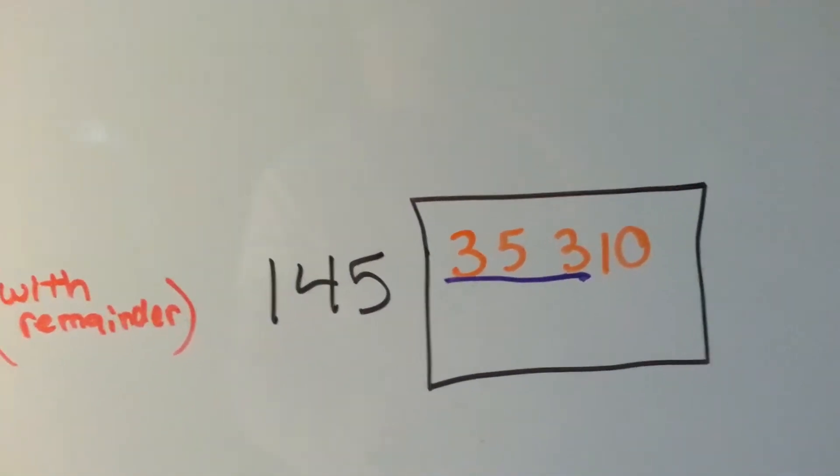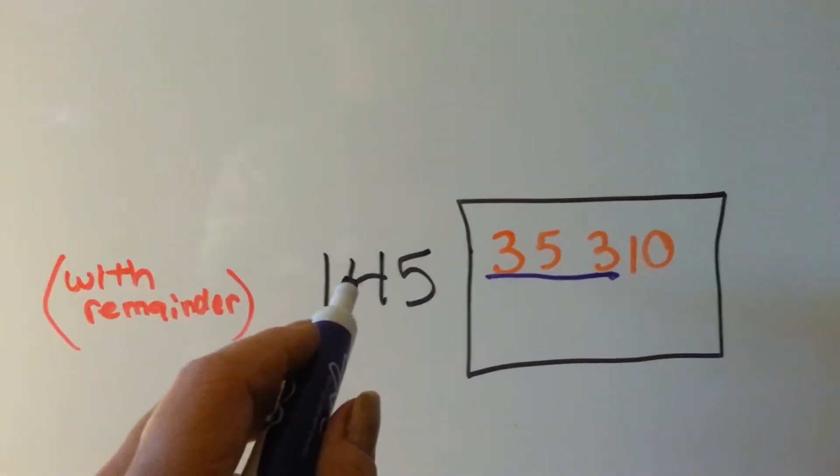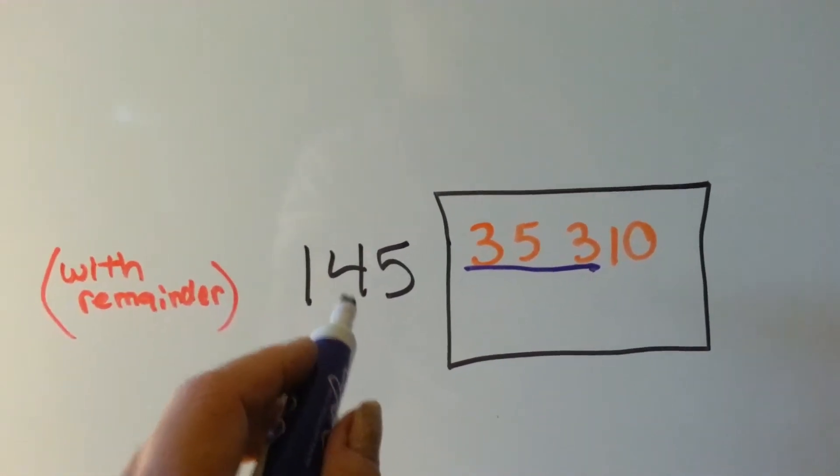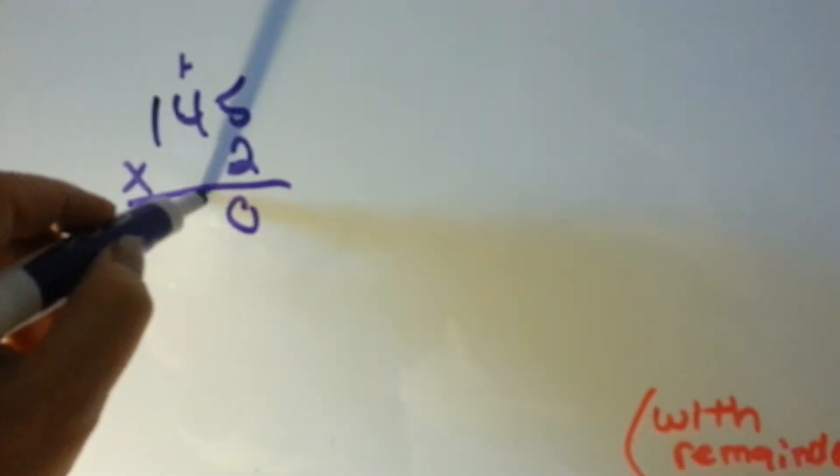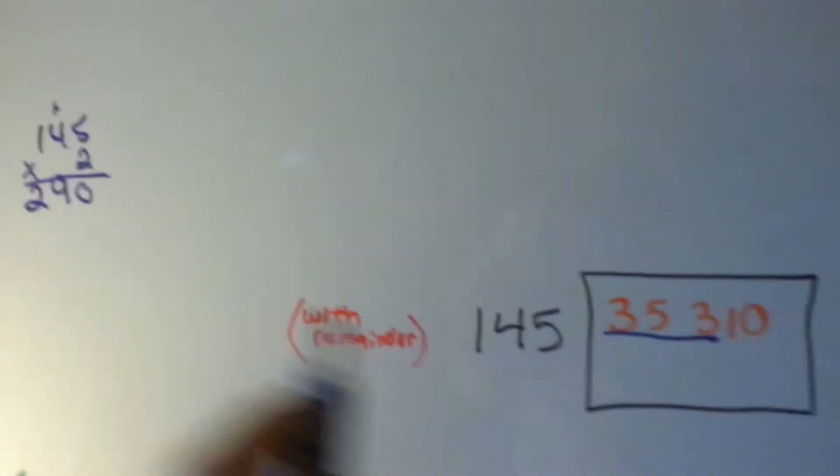So, how many times can 145 go into 353? Well, I know it rounds to 150, and 150 and 150 is 300, but let's double check. 5 times 2 is 10, carry the 1, put the 0 down.